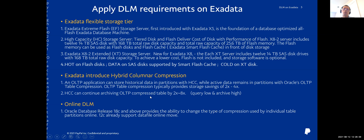On Exadata, HCC Hybrid Columnar Compression has four options: HCC Query Low, HCC Query High, Archival Low, and Archival High. Based on our tests, HCC can achieve a much higher compression ratio. Compared with OLTP compression, on average we can gain another four times storage saving. So when the data's lifecycle changes, we move the data from flash storage server to the HCC storage server.